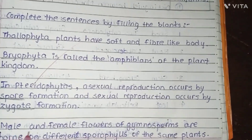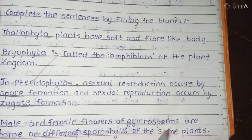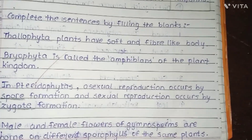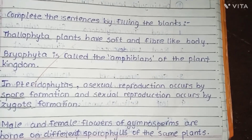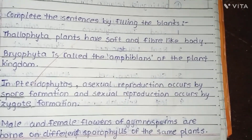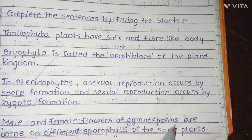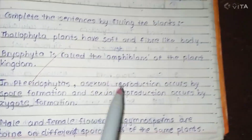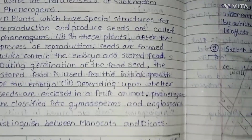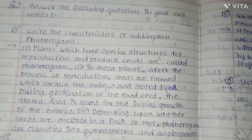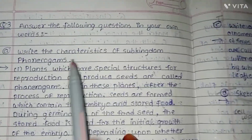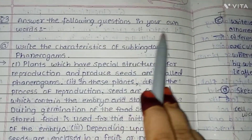Question number four: male and female flowers of blank are born on different plants; the example is Gymnosperm. This completes question number two — fill in the blanks. I hope you understand very well.